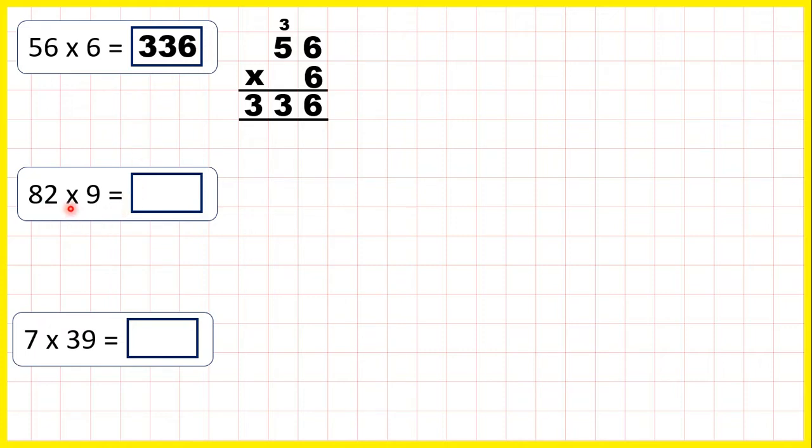Now 82 times 9, so we can set it out in the same way. 2 times 9 is 18, so 1 8, and 8 times 9 is 72, but we need to add the one on top to make 73. So our answer is 738.